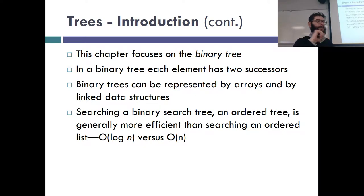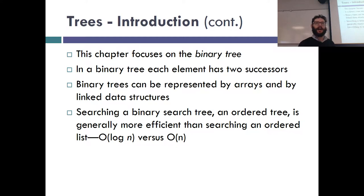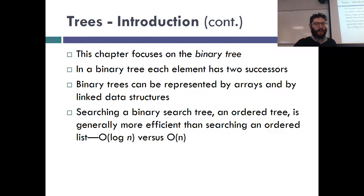Chapter 9 covers self-balancing trees, which ensure everything remains log-N worst case and average case — we likely won't cover that due to time constraints. With the trees we're learning, we don't learn rotations, so on average it will be log-N, but worst case it could be O(N). You can accidentally grow a tree so it looks like a linked list, but that's very rare.